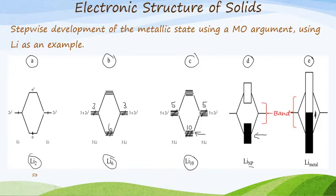There is a band, and in this case you'll see that there's a gap — this is for a nanoparticle, so there's a bit of a gap. We call that the band gap. And of course this is the band where electrons can move.